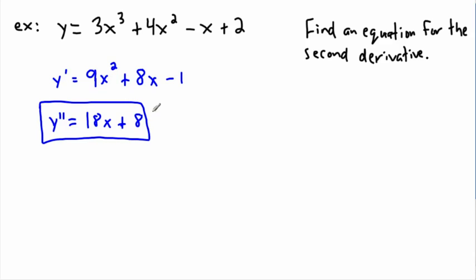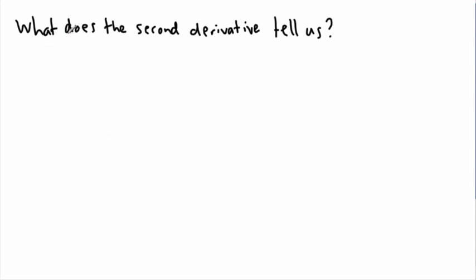Of course I could factor or do other things with it, but the goal was just to show how you go about taking a second derivative. In principle it's very simple — just take the derivative of the derivative, doing it twice. But why would we do this? What does the second derivative actually tell us? It tells us about concavity.